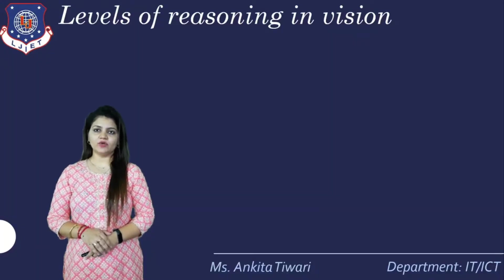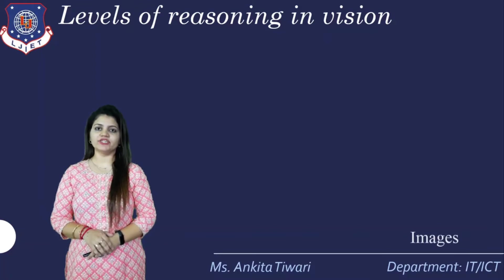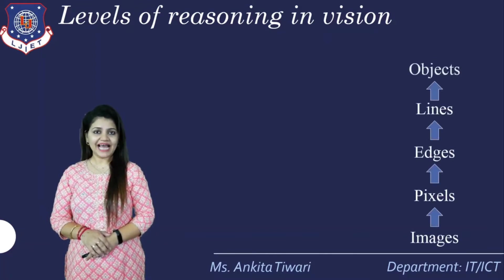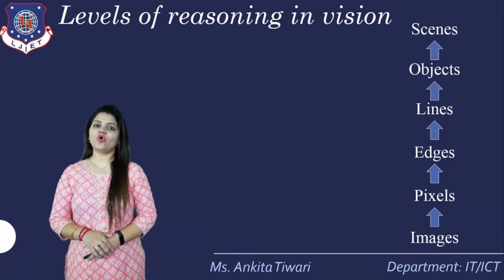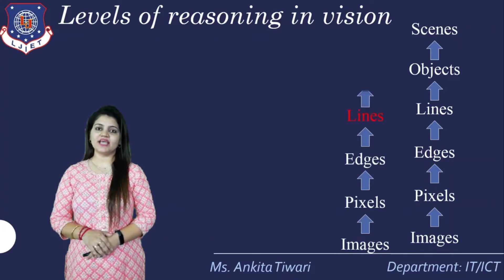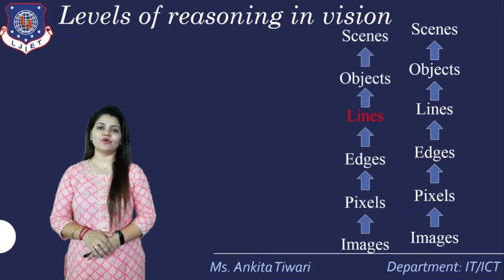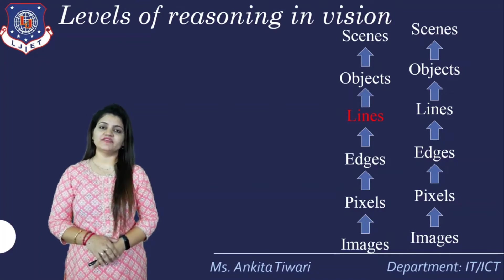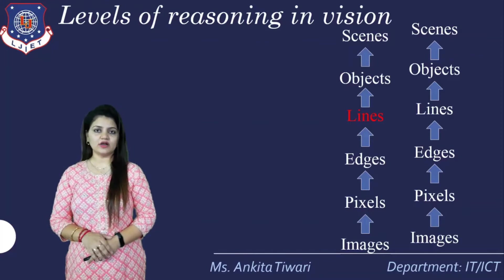Starting with the levels of reasoning which we study in computer vision: images, then pixels, then edges, then lines, then objects, and then scenes. Right now we are going to cover pixels, edges, then lines, objects and scenes. We are going to learn about the various detection techniques for lines as well as curves.